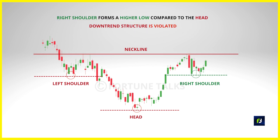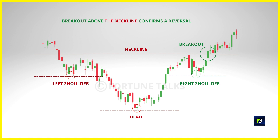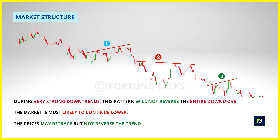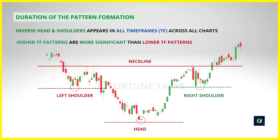The sellers tried to push the price down one last time but were met with intense buying pressure, forming a higher swing low compared to the head, which forms the right shoulder. This tells us that sentiment has changed from bearish to bullish. If the price breaks above the resistance, the inverse head and shoulders is confirmed and the market could continue higher. What matters is the strength of the market structure and the duration of the formation. If the market trend is strongly bearish, the chances of reversal are quite dim, and a short inverse head and shoulders pattern is more likely to fail, especially when trading it against the trend.